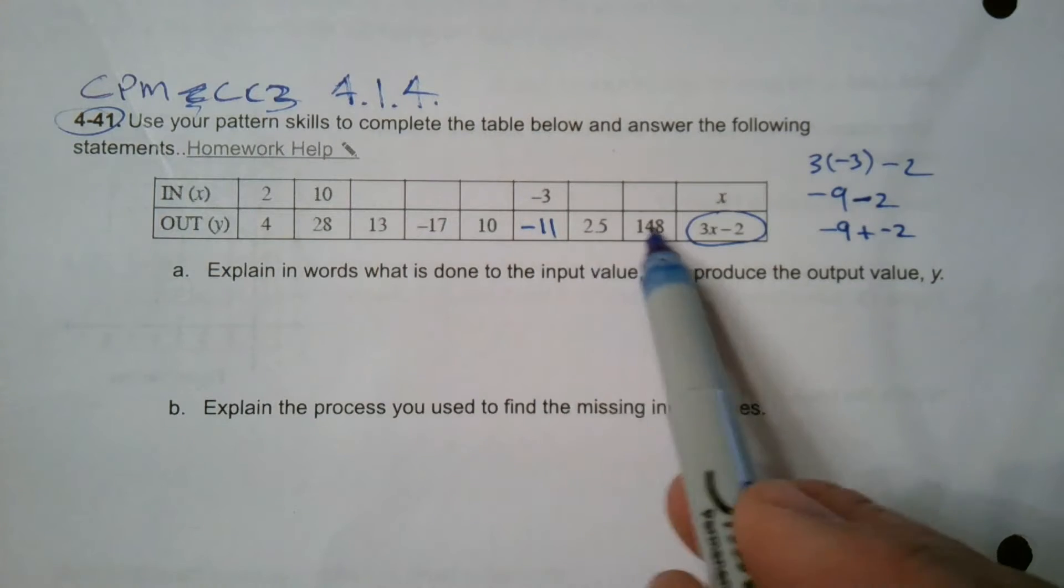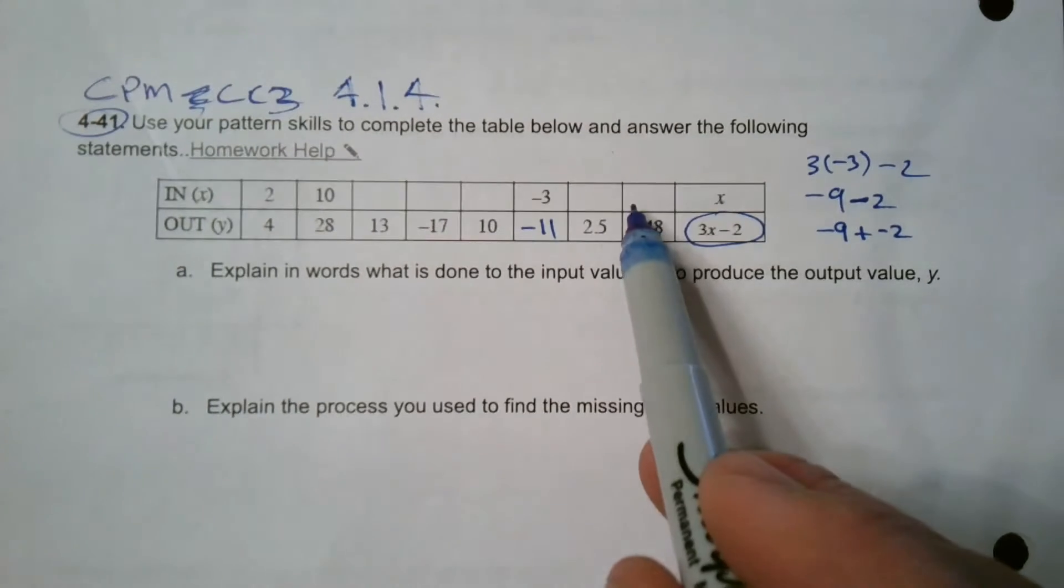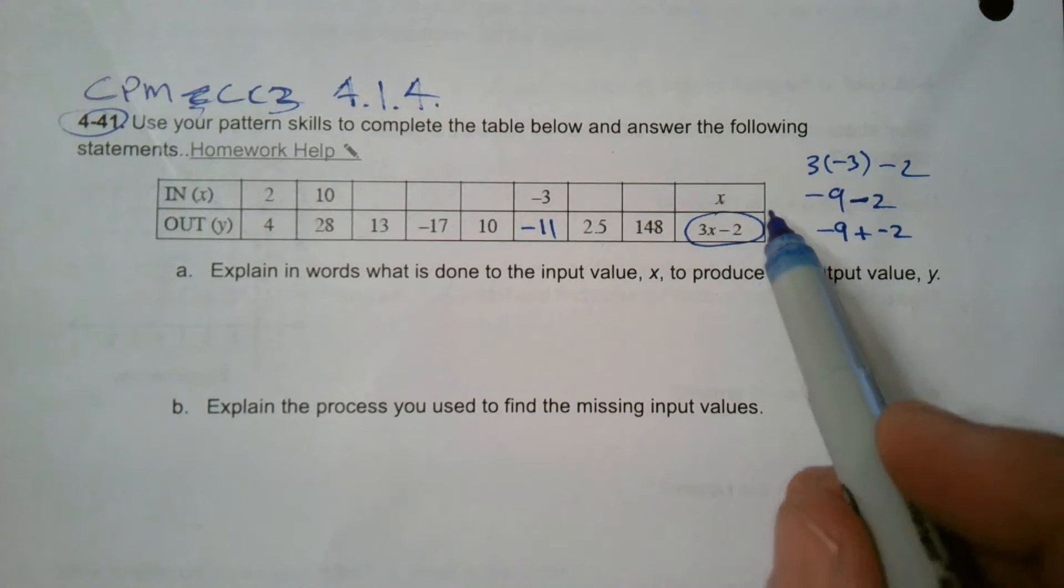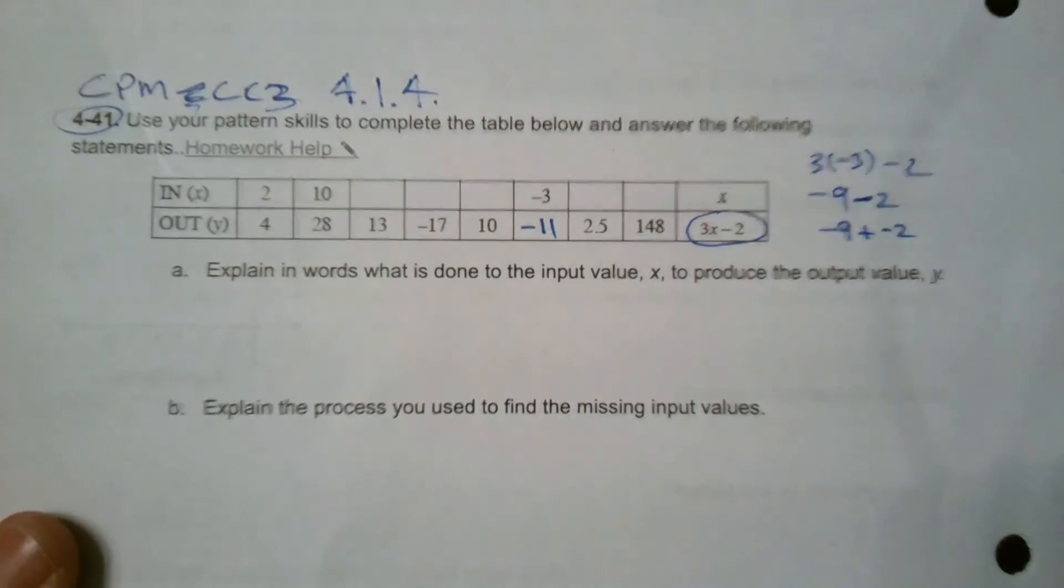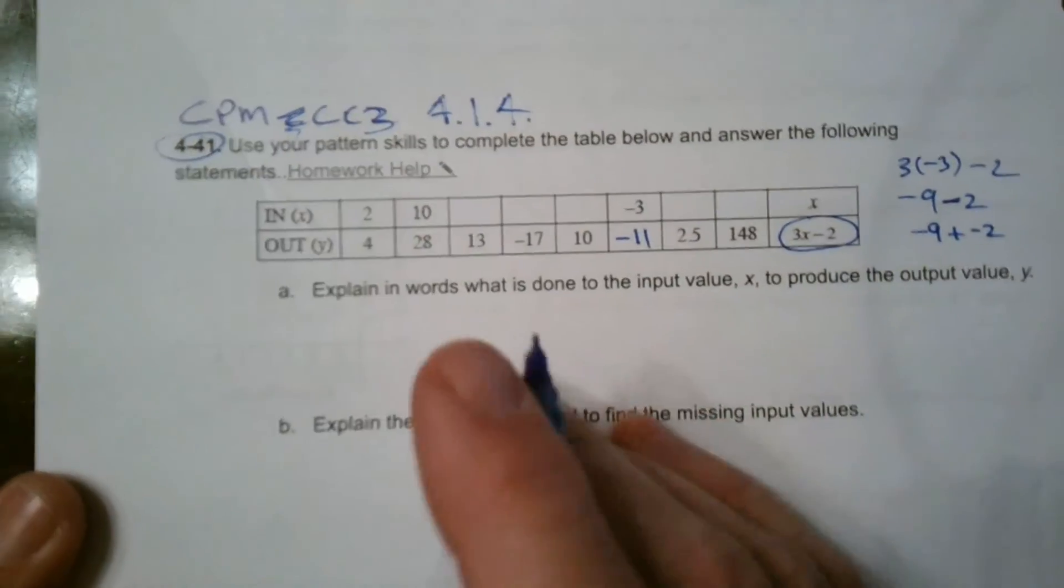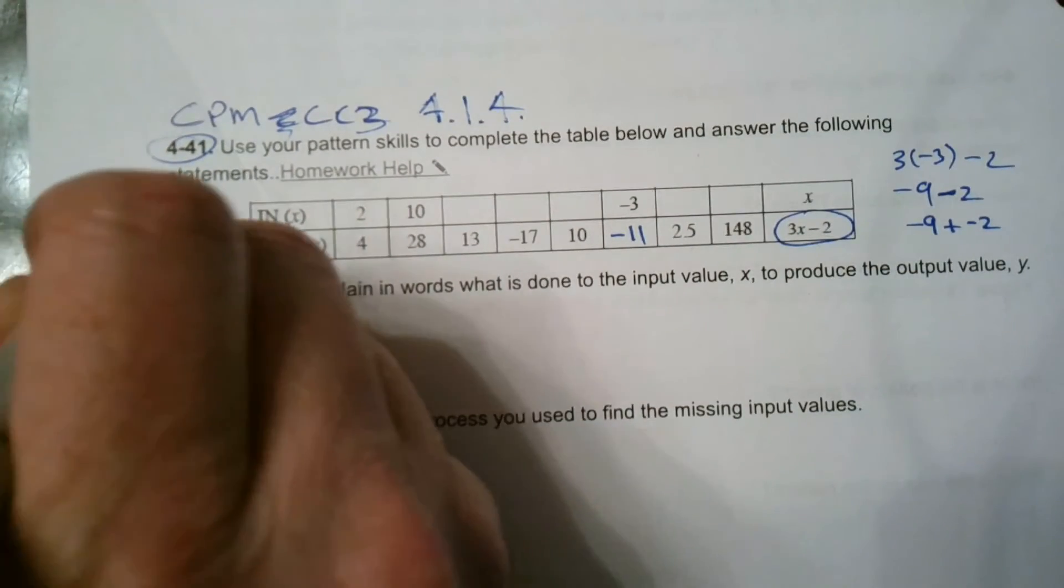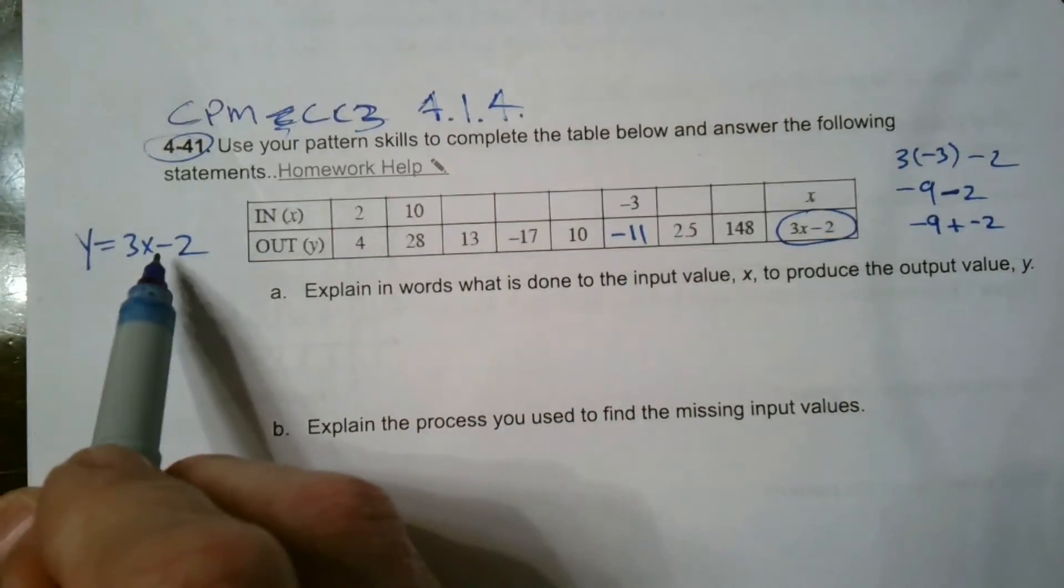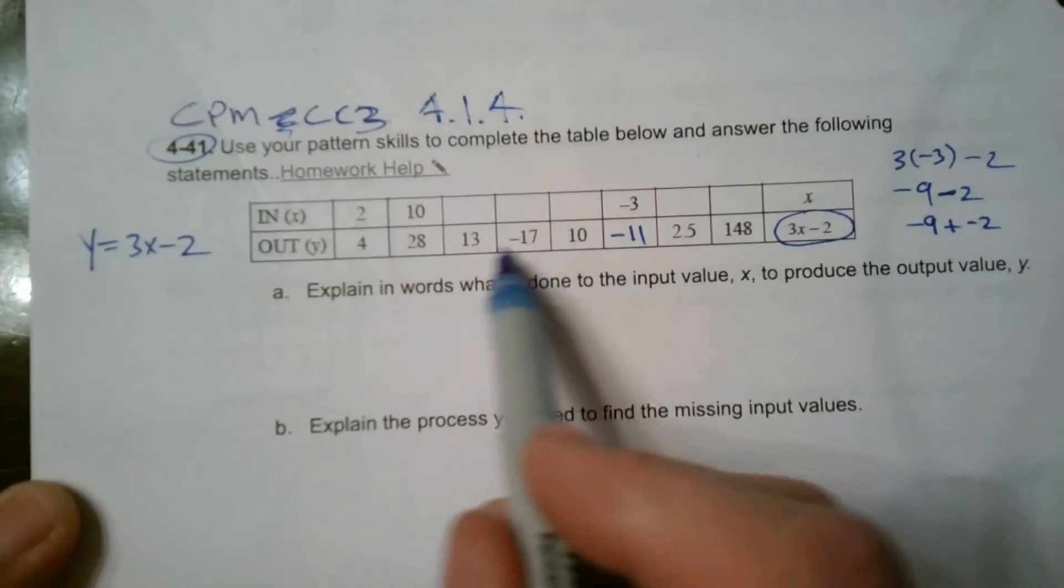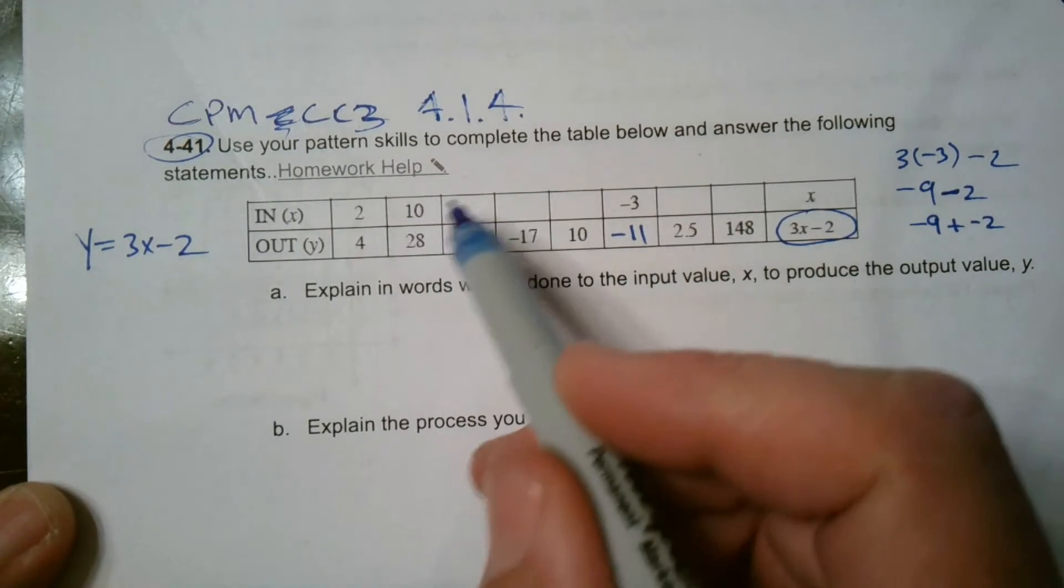Subtraction is always adding the opposite as well. So negative nine, negative two makes that negative 11. Now we have a bunch of Y's here, and I've got to find my X's. So remember, my rule is 3X minus 2.